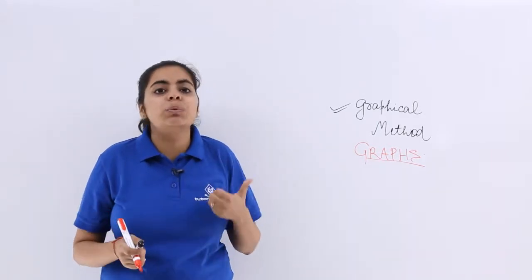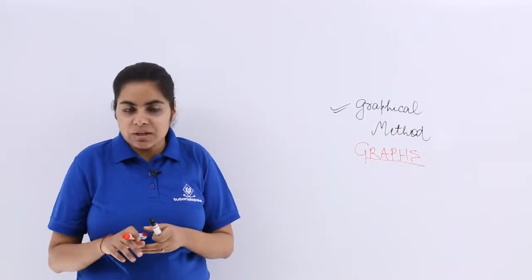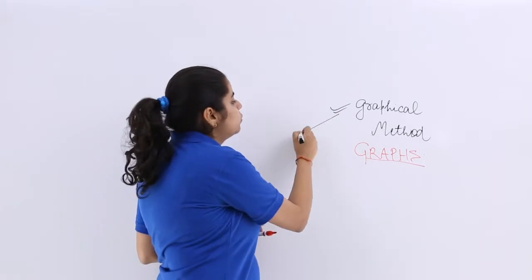So what kind of things do we need to know in order to go for the graphical method? The first thing is that graphical method itself is of two types.